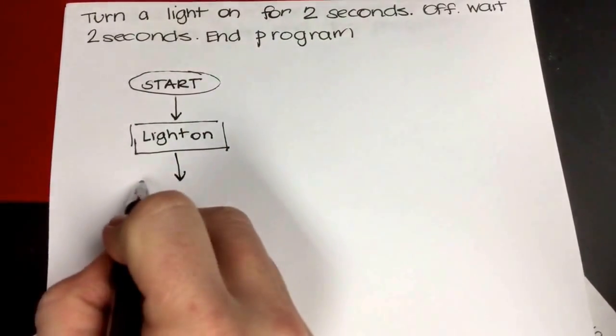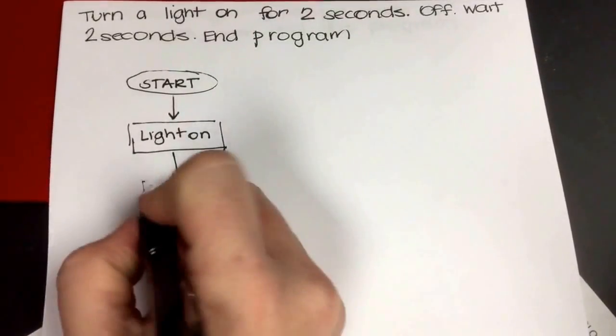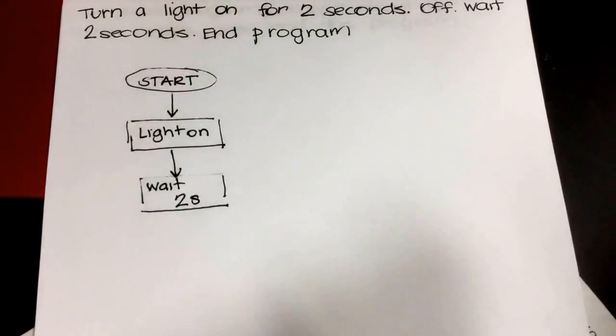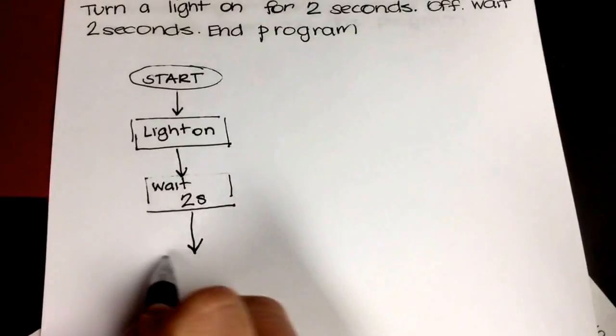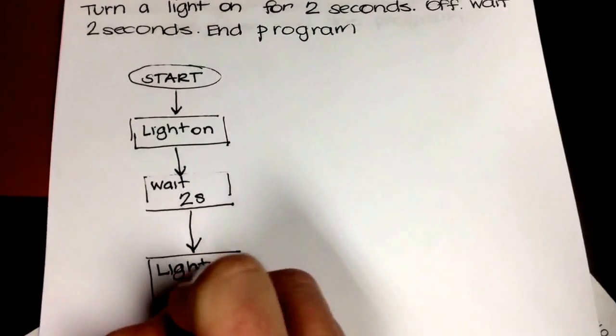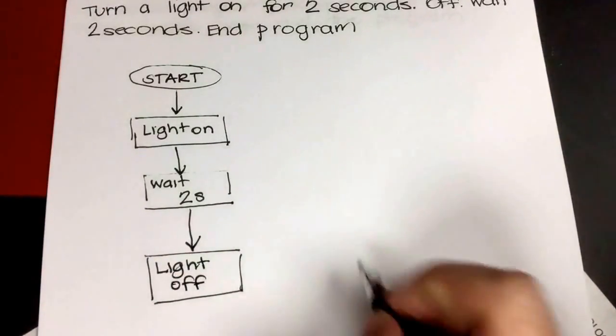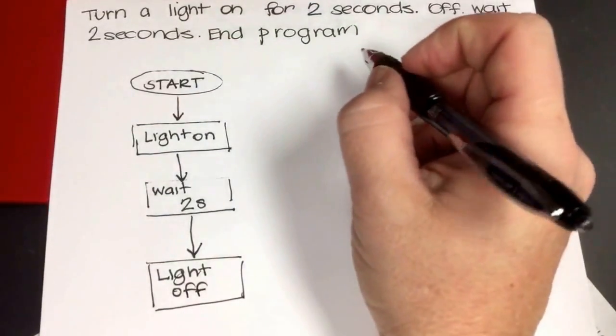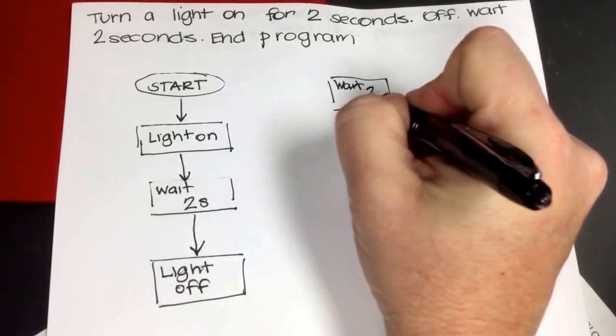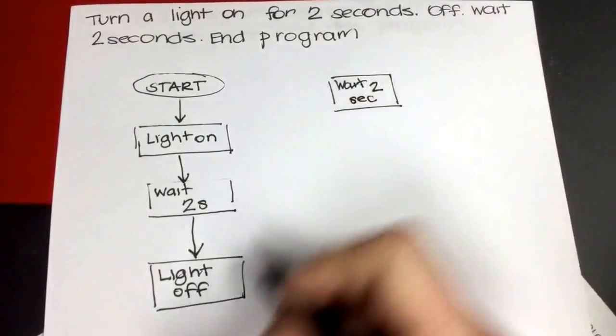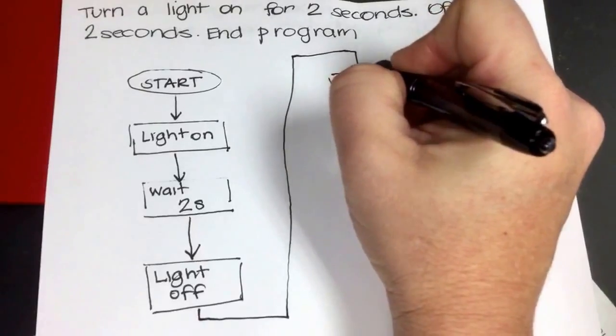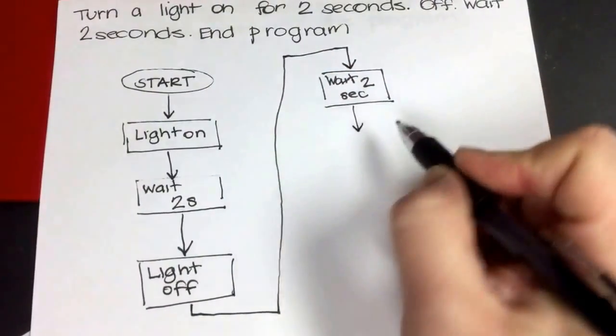And then we want that light to stay on for two seconds. So we really just need a wait or a timer. Then we want to turn the light off. Okay, then the next thing we want to do is we want to wait another two seconds. So we're going to bring our process flow up and into the wait. And then once that's done, we want to end the program.